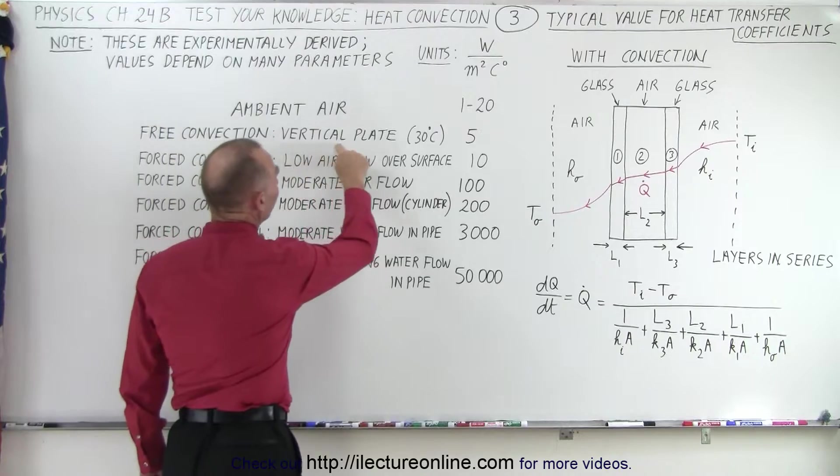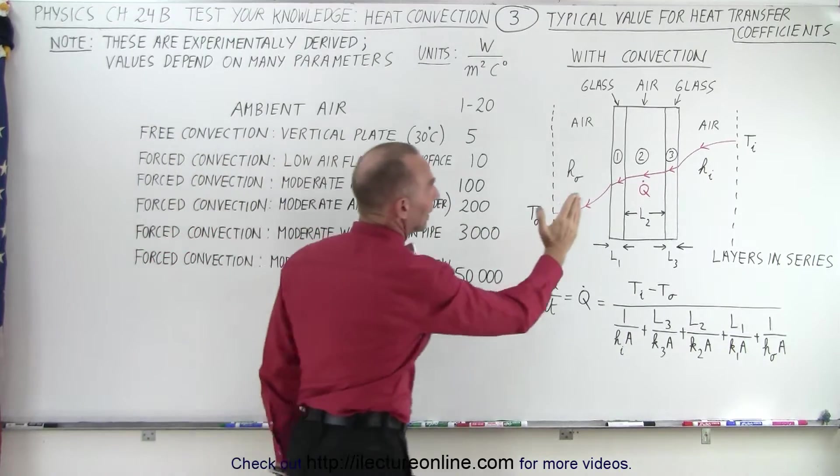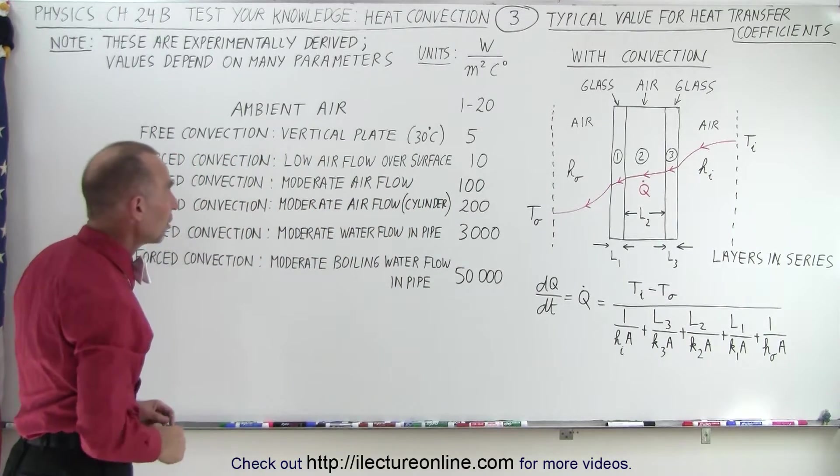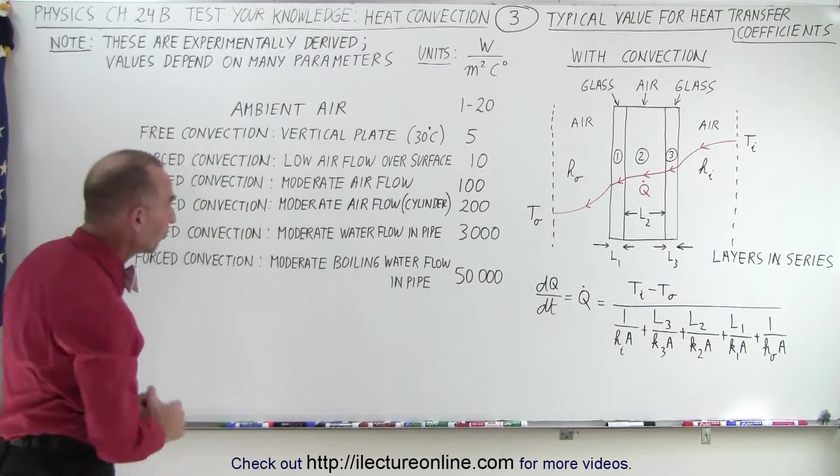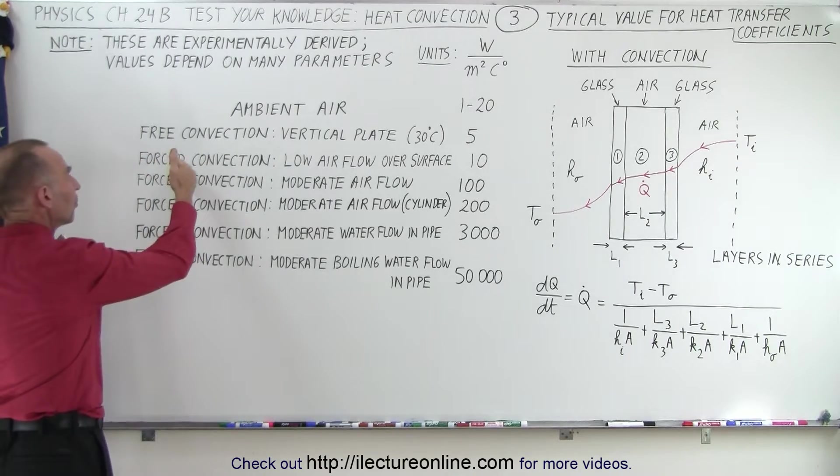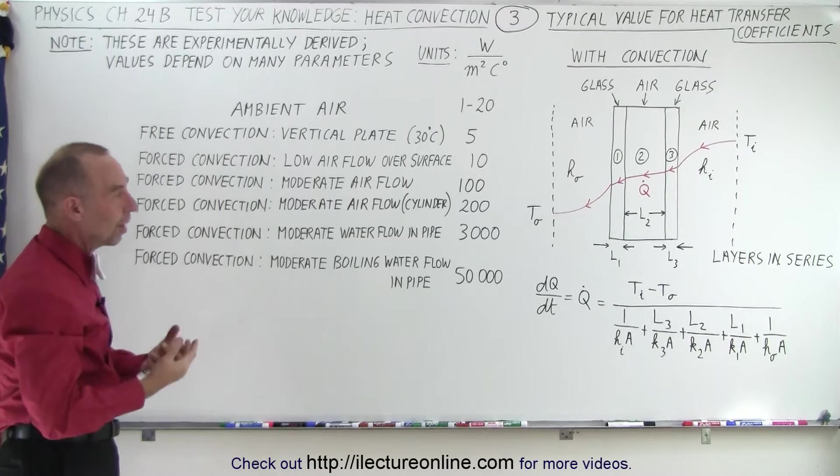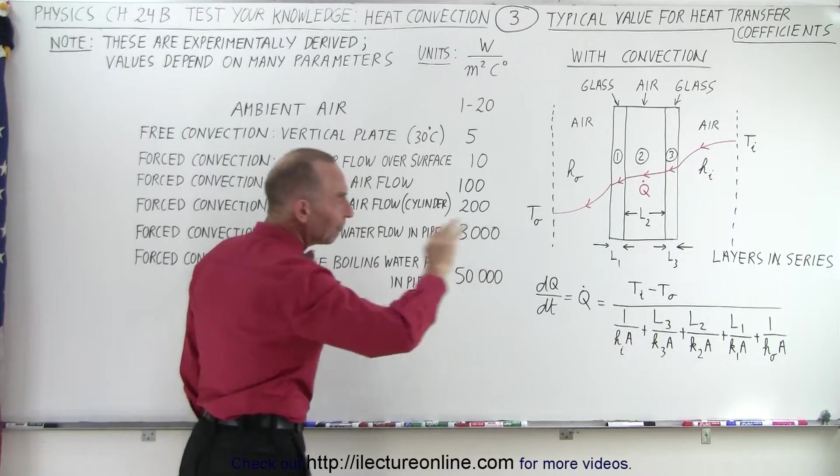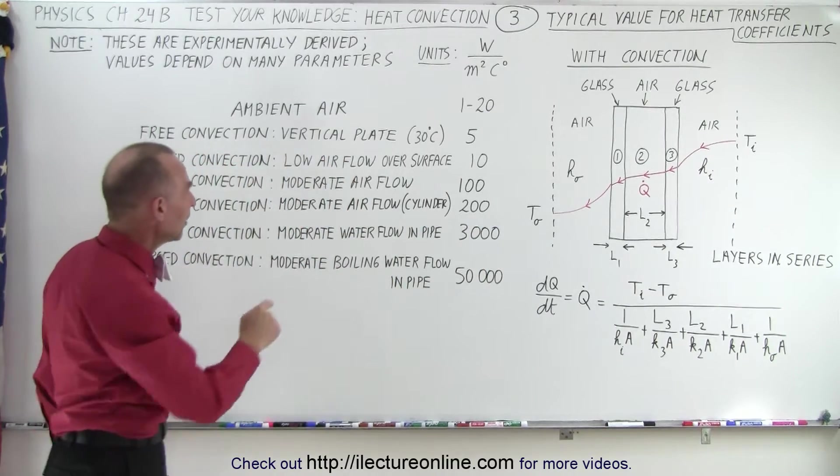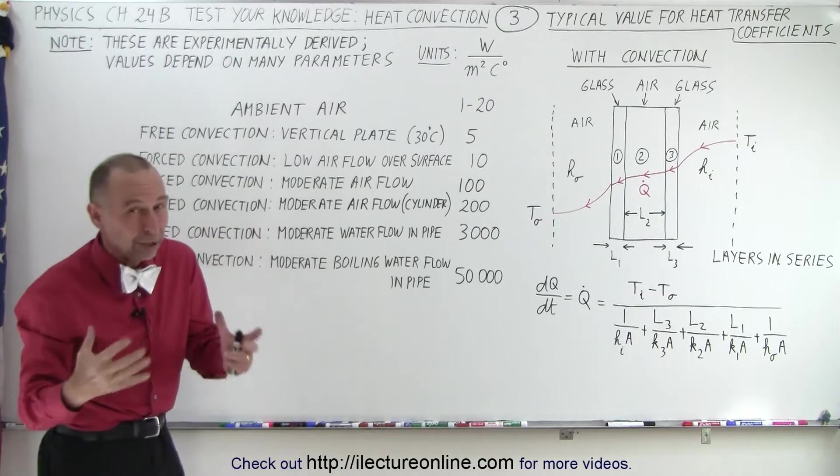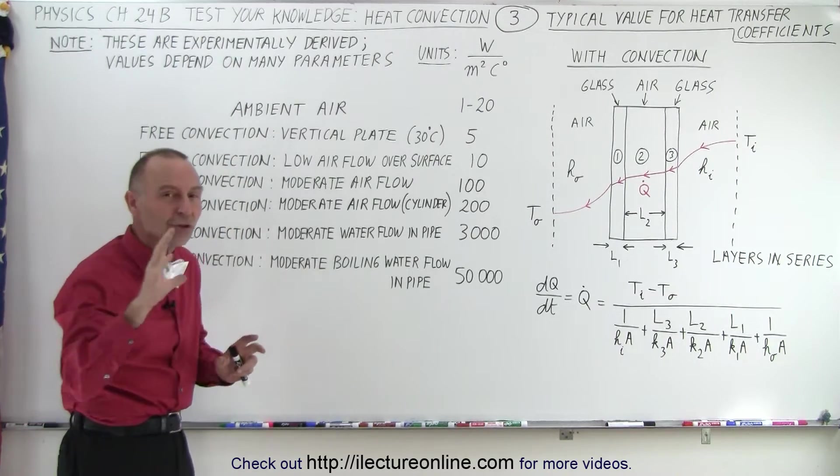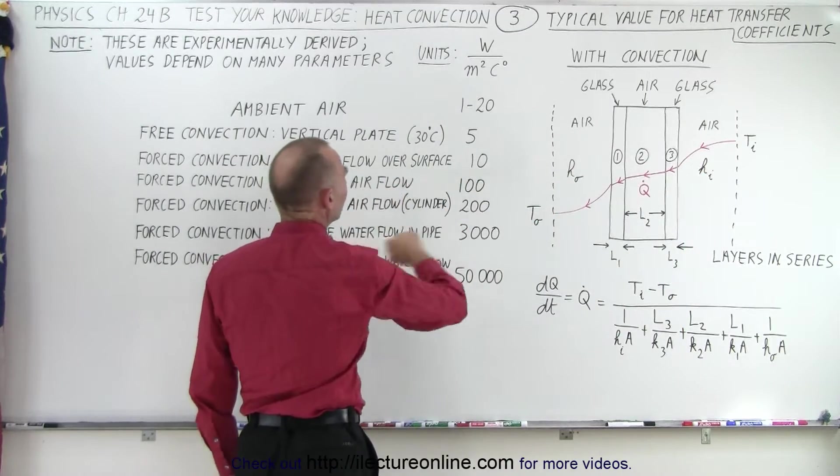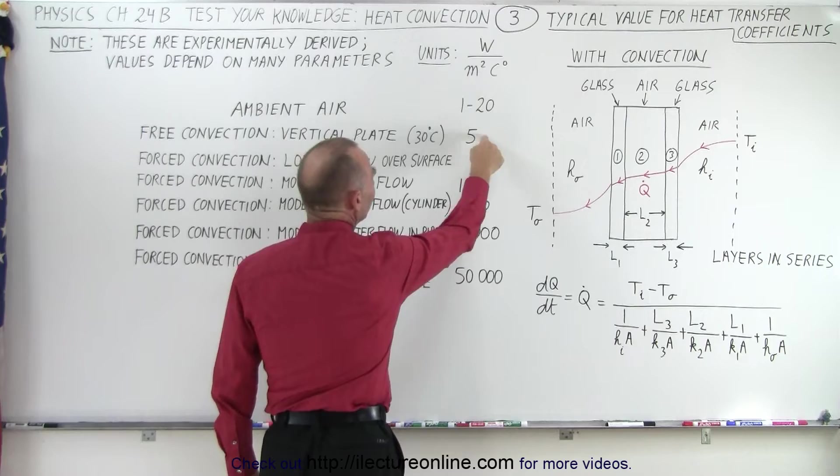Notice also that they're talking about the vertical plate, because the plate can be vertical, or the plate can be horizontal, and the orientation of the plate does also make a difference, and we'll show you that in some later videos. Notice that when we have forced convection the constant goes up. The conductivity will go up when we force airflow over or towards the surface. Now in this case, it's low airflow. A very small, gentle breeze across the surface, parallel to the surface. That's what we mean by airflow over the surface. Then it goes up from 5 to 10.